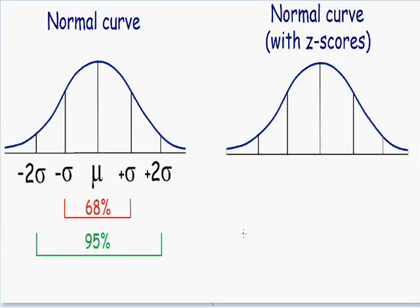Let me draw this for you on the normal curve. If you remember from my last video, we always put the average in the middle of the normal curve. This Greek letter mu represents the average, and the average always has a z-score of 0. So I'm going to put the number 0 where the average is, right in the middle. The distance from the average to one standard deviation above is going to have a z-score of positive 1.